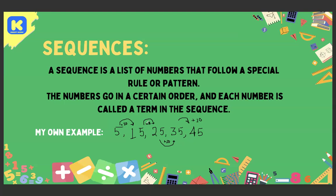You can make your own examples — the 2 times table, 3 times table, 4 times table, 5 times table — they are all sequences. Whatever you write, it should follow a certain order, like how every time we add 10 to get the next number. That is a sequence.